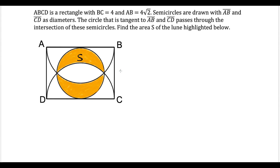We have BC is four units long. We have AB is four radical two units long, and we're told that we have semicircles with diameters AB and CD like this. So what I would do from here is label these points — let's call this point up here point O and we'll call this point P, because anytime you're given semicircles it's always good to identify the center.